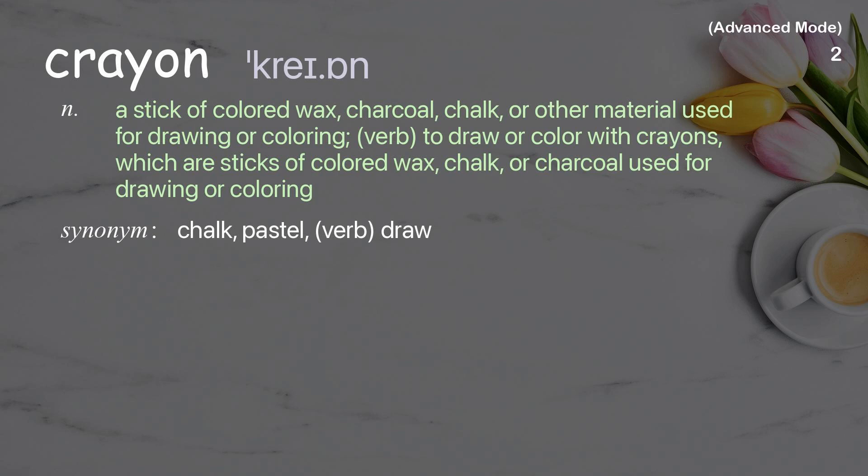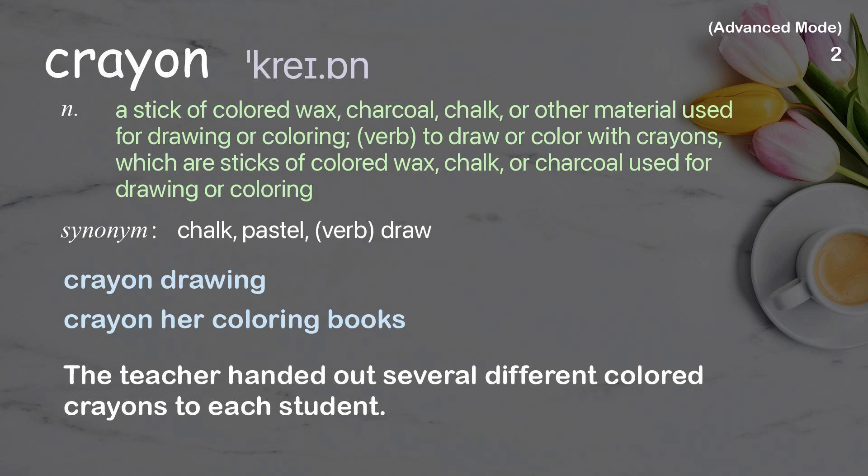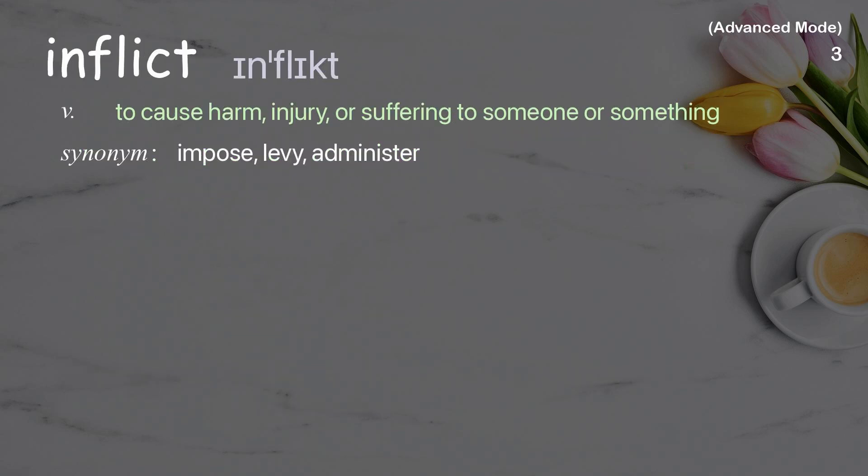Crayon: a stick of colored wax, charcoal, chalk, or other material used for drawing or coloring. Verb: to draw or color with crayons. Examples: crayon drawing, crayon her coloring books.